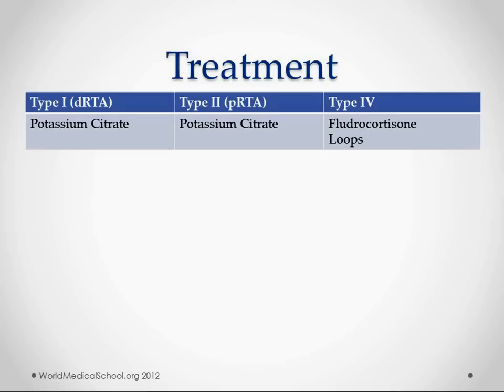How do we treat it? For type 1 and type 2, our biggest concern is the potassium, so we give potassium citrate, and of course we're going to give fluids. For type 4, we give fludrocortisone, which is a mineralocorticoid like aldosterone, and we also give loop diuretics.